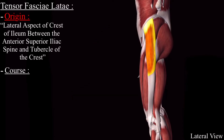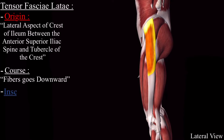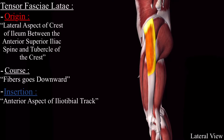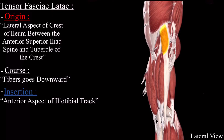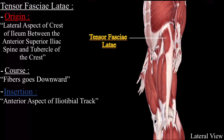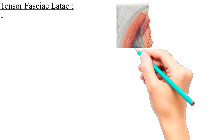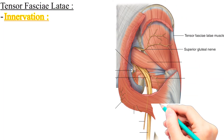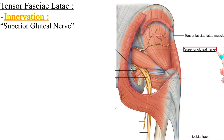After origination, the fibers of the tensor fasciolata descend downward and insert on the anterior aspect of the iliotibial tract. As you can see, this is the tensor fasciolata muscle and this is the iliotibial tract, where it inserts on the anterior aspect. The tensor fasciolata muscle is innervated by the superior gluteal nerve.